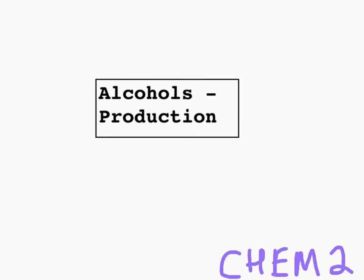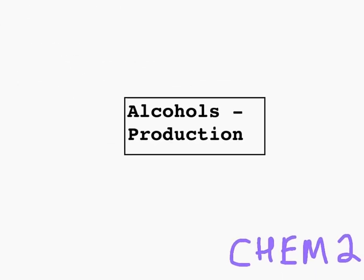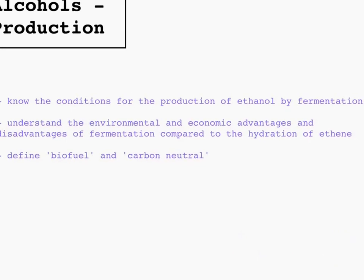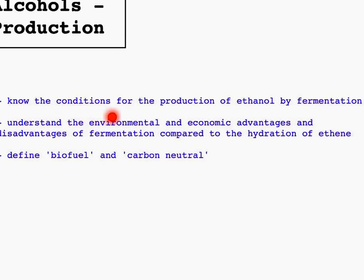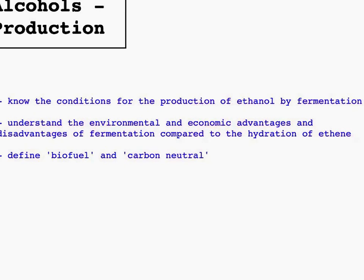This video is on the production of alcohols. The aims of this video are to know the conditions for the production of ethanol by fermentation, understand the environmental and economic advantages and disadvantages of fermentation compared to the hydration of ethene, and to define biofuel and carbon neutral.